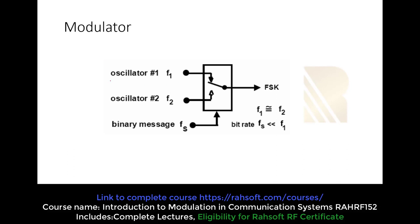It's actually very simple — we have two oscillators. The first oscillator produces F1, so we can say it produces A cosine omega-1-t plus the initial phase phi-0. The second produces A cosine omega-2-t plus phi-0. What we are doing here is essentially a switch. When the binary data is 0, we switch to oscillator 1, so at the output we have omega-1 frequency. When the binary data is 1 (high level), we switch to oscillator 2 — F2 — and we have omega-2 at the output.